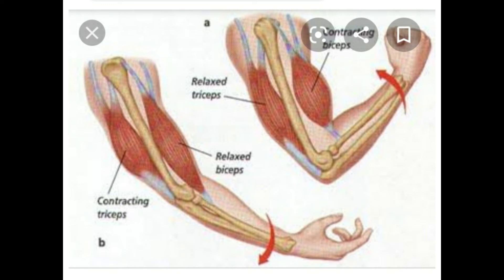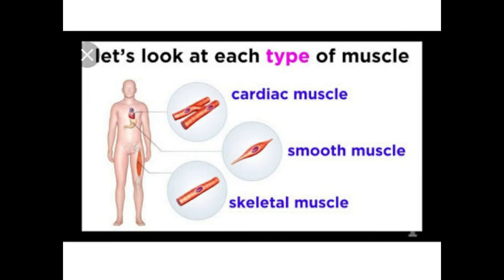The muscular system accounts for nearly half the weight of the human body. Let's look at each type of muscles. There are mainly three types of muscles in our body.